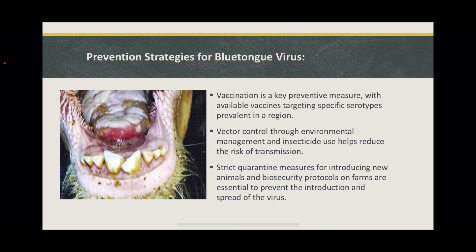Vaccination stands as the cornerstone of preventing blue tongue virus infections in livestock. Vaccines should be designed to target specific BTV serotypes prevalent in the region. Implementing routine and timely vaccination schedules is essential to establish and maintain immunity within the herd or flock. Mitigating the risk of BTV transmission also involves implementing effective vector control measures. Environmental management practices such as reducing standing water and managing vegetation can impact the breeding and activity of the midges.